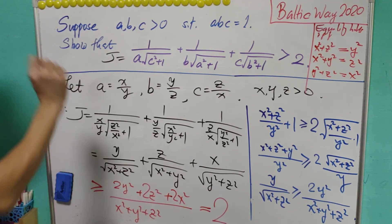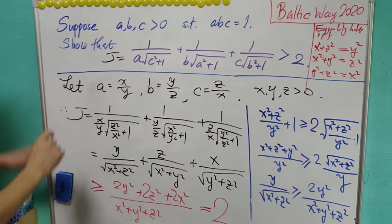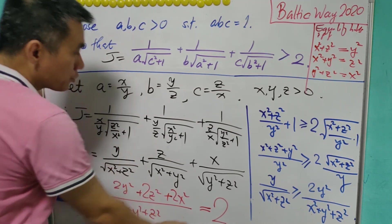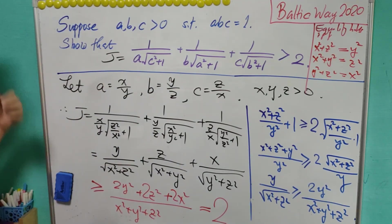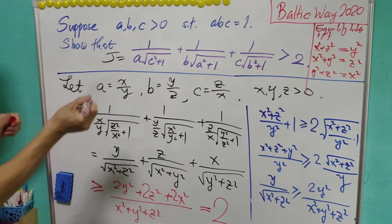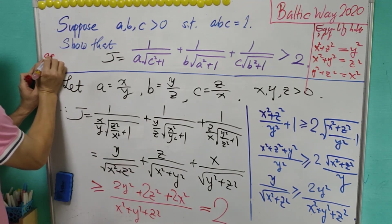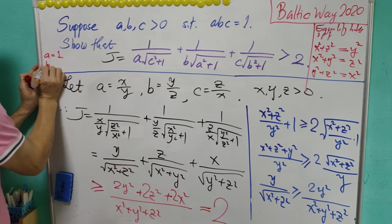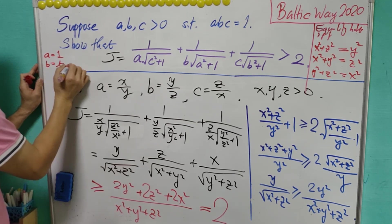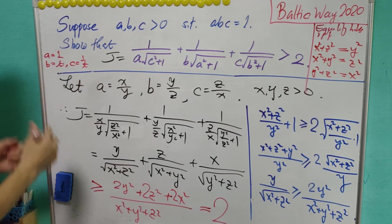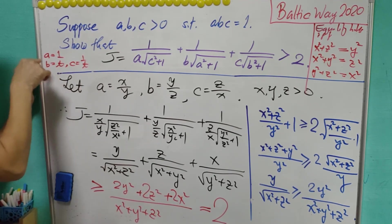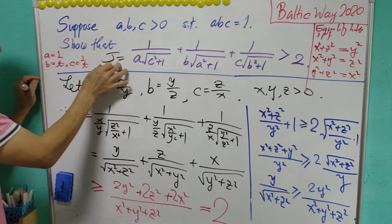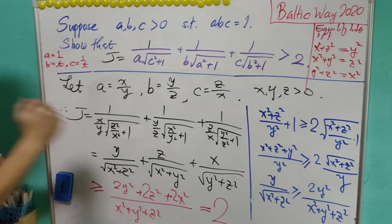That's one last point we can take note of: although J is never equal to 2, it can be as close as to 2. We can show this by letting a equals 1, b equals t, and c equals 1 over t for some positive t. When t goes to infinity, then we'll see that J is very close to 2. That's all for today's lesson. I'll see you again next time, bye bye.